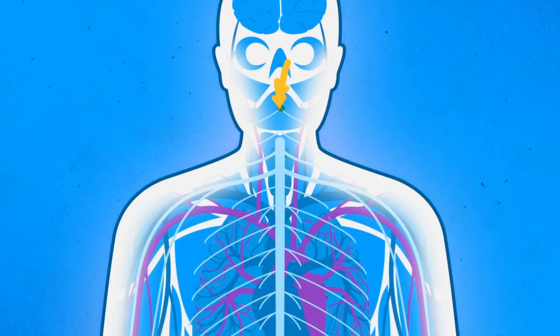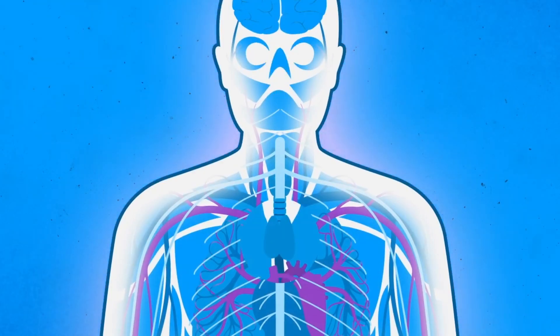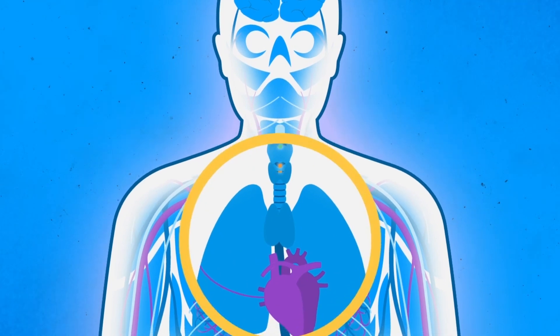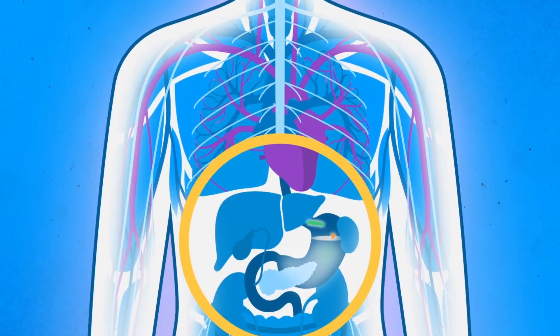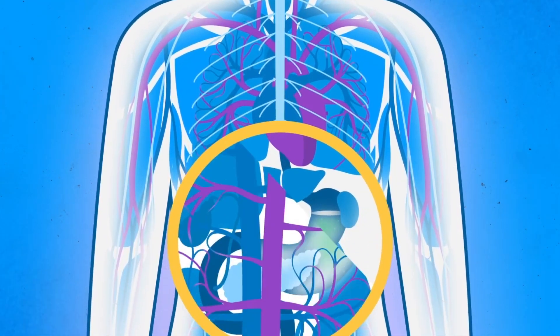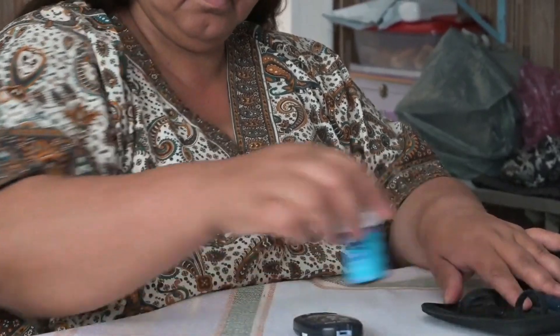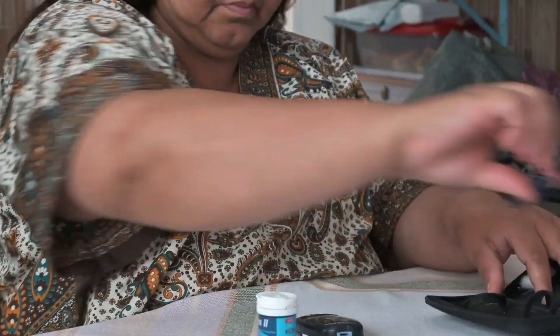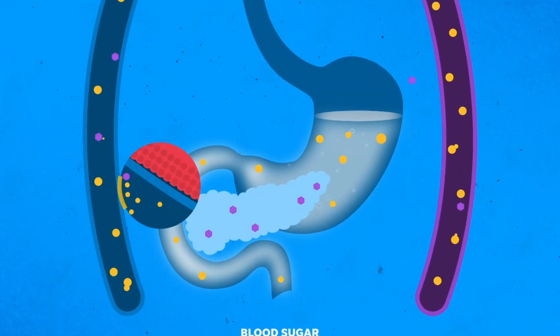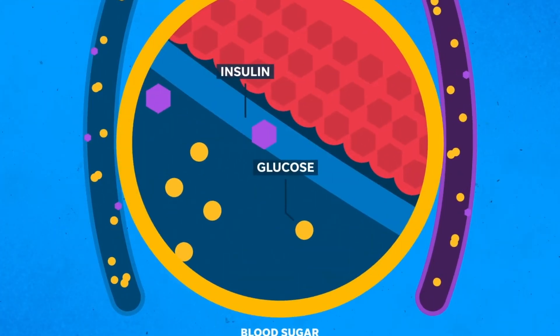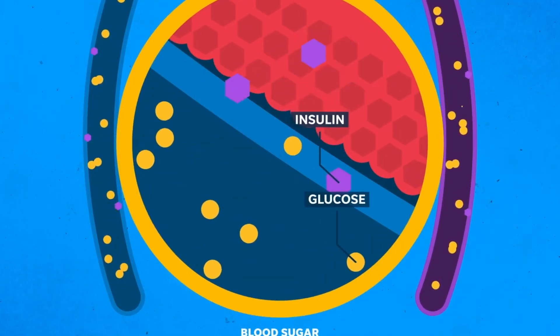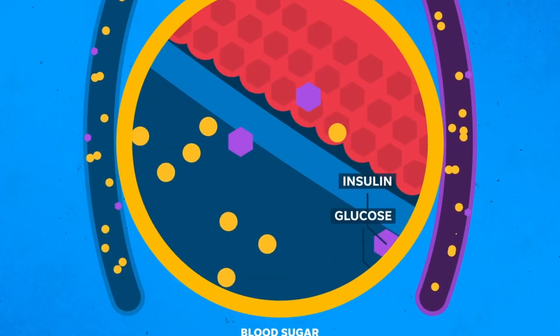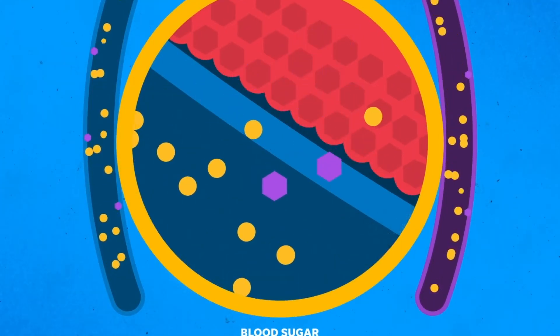Primary Care Physician or Endocrinologist: The primary care physician or endocrinologist is often the starting point for diabetic meal planning. They diagnose diabetes, prescribe medications if necessary, and set blood sugar targets. Their role includes monitoring the patient's health, adjusting medication as needed, and providing guidelines for nutritional goals and blood sugar control.